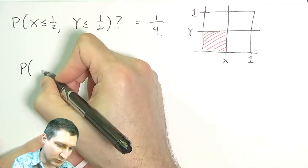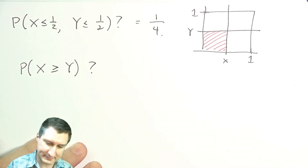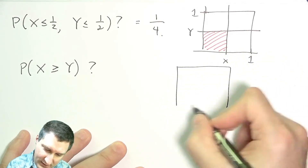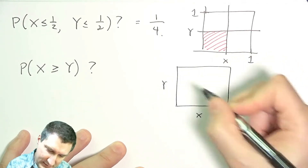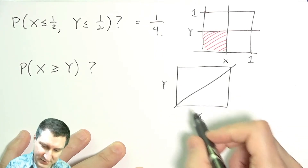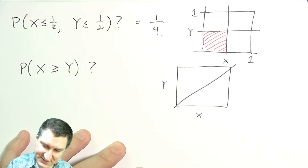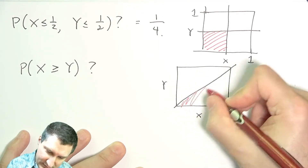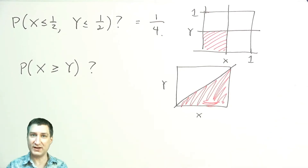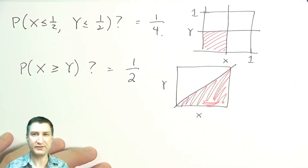Or I could ask: what's the probability that X is greater than or equal to Y? Drawing the square, the line X equals Y divides it, and X being greater than Y corresponds to one half of the square. I can see that the red event makes up half of the total square, so this probability is one-half.